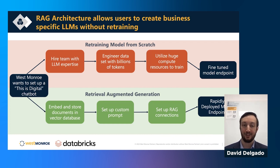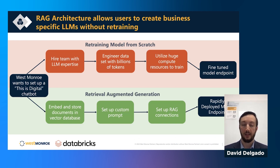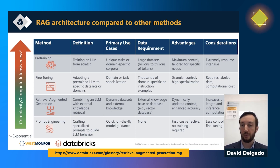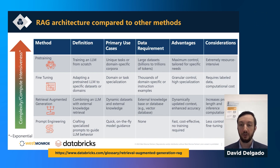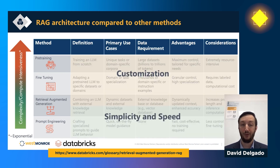The other option is retrieval augmented generation. This is where we take relevant documents, embed them, and store them in a special database called a vector database, set up a custom prompt, connect things together, and end up with a model endpoint that's not as finely tuned as training from scratch, but we arrive there much faster with a lot of the same functionality. RAG architecture hits that sweet spot between being simple and fast to value, while also providing a level of customization similar to pre-training or fine-tuning.